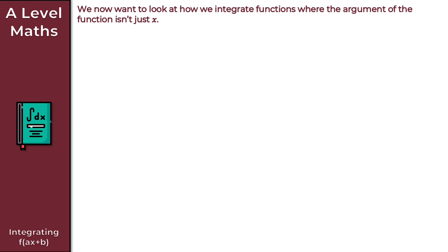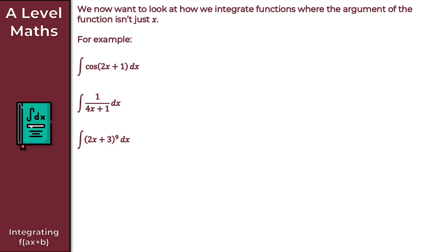In this video we're going to take a look at integrating f(ax + b). We now want to look at how we can integrate functions where the argument of the function isn't just x. So a few different examples: we might want to find the integral of cos(2x + 1) with respect to x, or integrate 1 over (4x + 1), or integrate (2x + 3)^9 with respect to x.